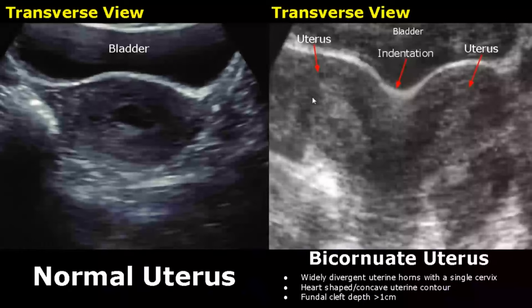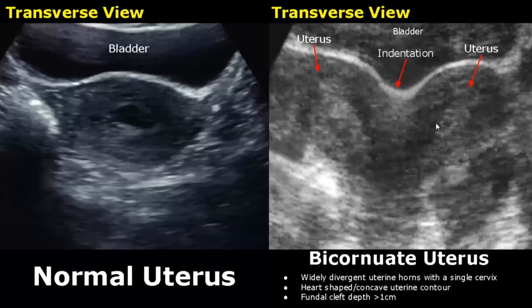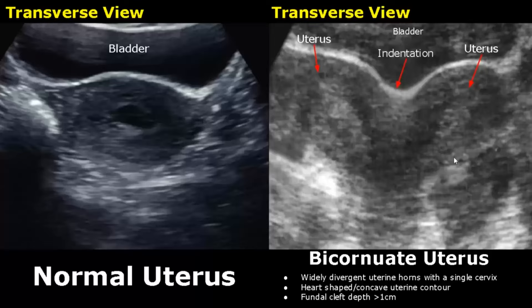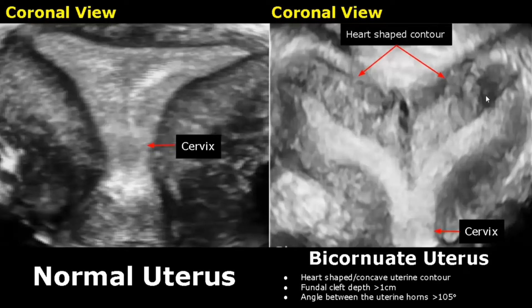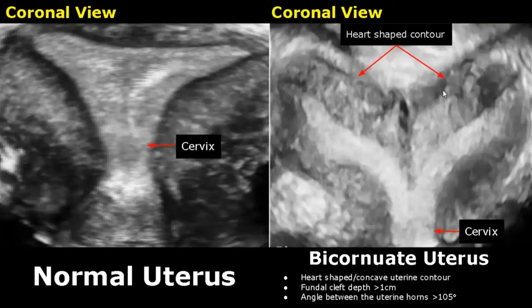In a bicornuate uterus, the uterine horns are widely divergent and there is usually a single cervix. The uterine contour is heart-shaped or concave-shaped. In the 3D coronal view, we can clearly see a heart-shaped uterine contour with the fundal cleft having a depth greater than one centimeter. The uterine horns are widely divergent with an angle greater than 105 degrees. Both uterine horns are connected to a single cervix.